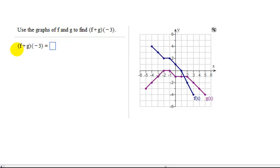Let's look at the first example. We need to find f plus g of negative 3. The first thing you need to do is write down what the definition tells you this equals. So remember the sum function means f plus g of negative 3 is just f of negative 3 plus g of negative 3.